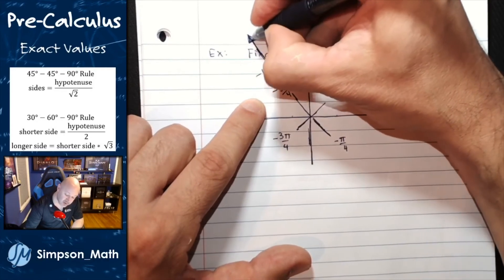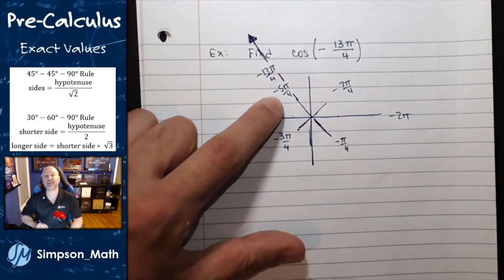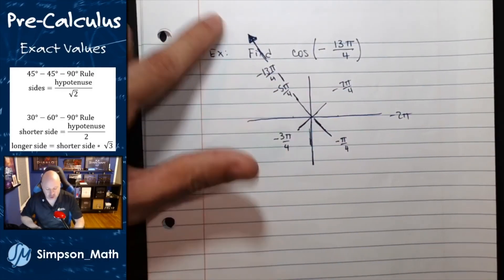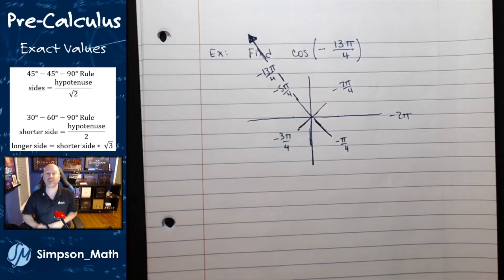Negative thirteen pi fourths is coterminal to negative five pi fourths. They look the exact same when drawn in standard position.